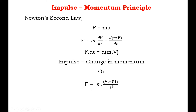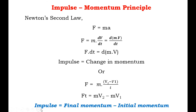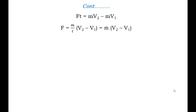Alternatively, F is equal to M·(V2 minus V1) divided by time t. Simplifying, Ft equals MV2 minus MV1, meaning impulse force equals final momentum minus initial momentum. The impulse momentum principle states that the impulse exerted on any body is equal to the resulting change in momentum of the body, mathematically F equals M/t·(V2 minus V1), where M/t is the mass flow rate denoted as M-dot.